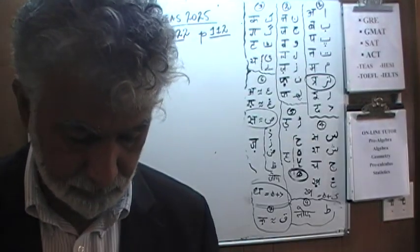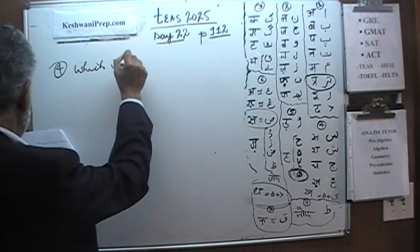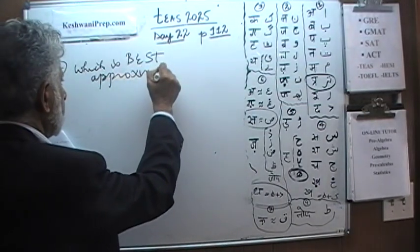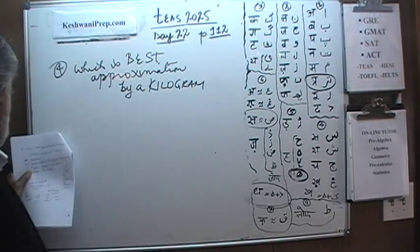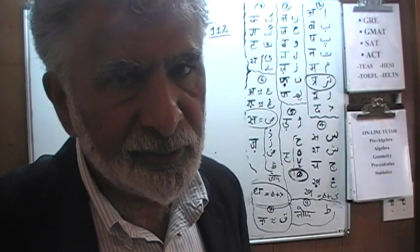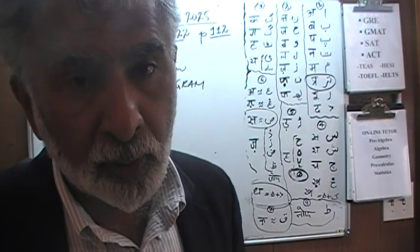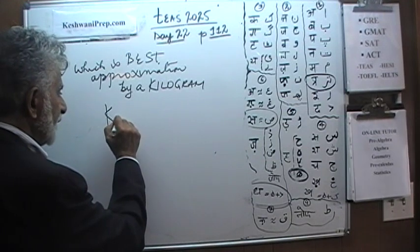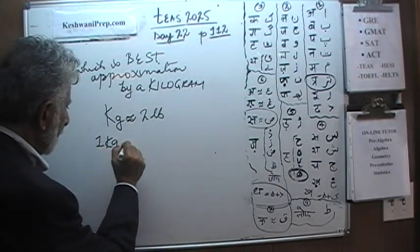Some of these problems are bizarre. Number four asks: which is the best approximation measured by a kilogram? In other words, out of the four answer choices, which would be an appropriate thing to measure using kilograms? A kilogram, abbreviated kg, is approximately 2.2 pounds. So one pound is a little over half a kilogram. Which of the four choices would you measure in kilograms or equivalently in pounds?